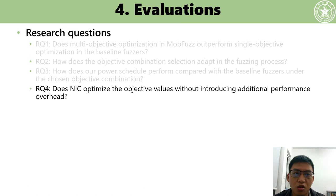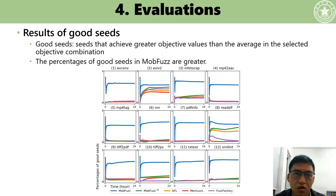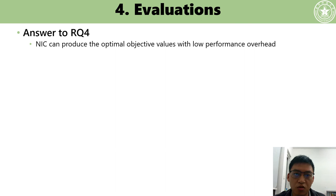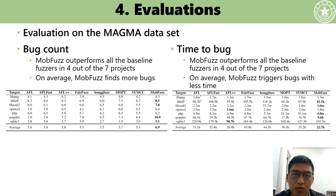Research question four: does NIC optimize objective values without introducing additional performance overhead? We define seeds that achieve greater objective values than the average in the selected combination as good seeds. The percentage of good seeds in MOB-Fuzz is greater than in baseline fuzzers. NIC brings about 3.3% performance overhead to the fuzzing process, which is acceptable. Therefore, NIC can produce optimal objective values with low performance overhead.